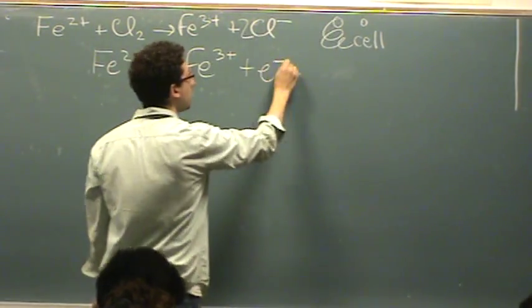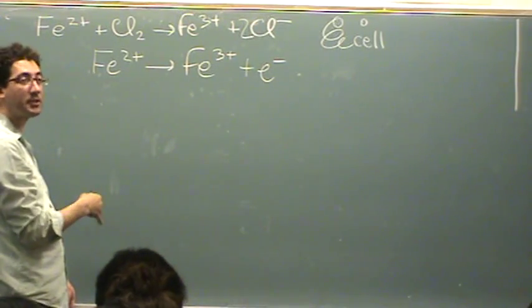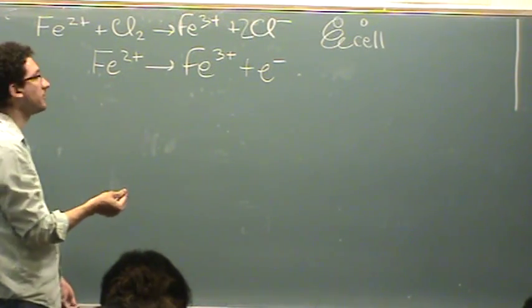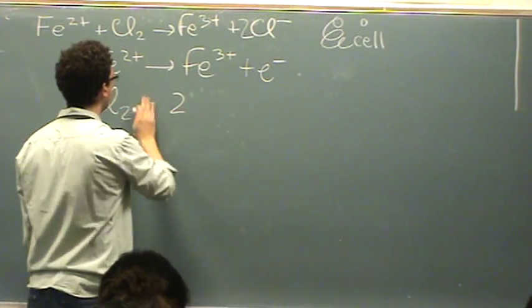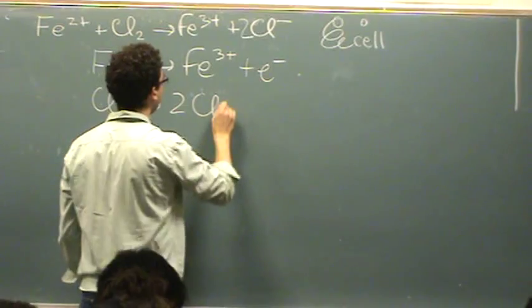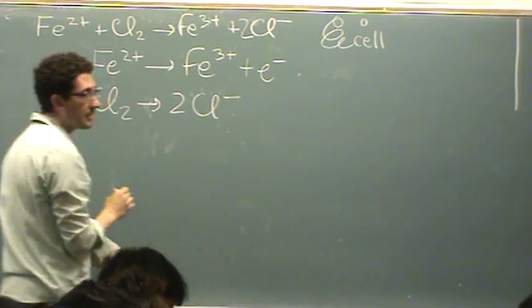So here's one. You don't have to totally balance it if you don't want to for what they're asking you to do. So there's one. The other one is Cl₂ goes to 2Cl⁻. I have two electrons here. Don't totally need that.